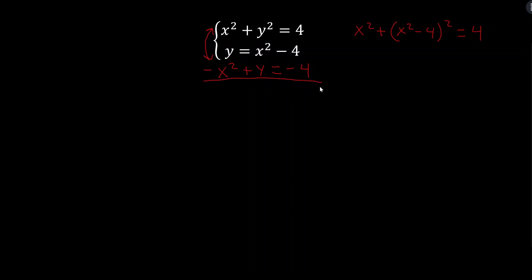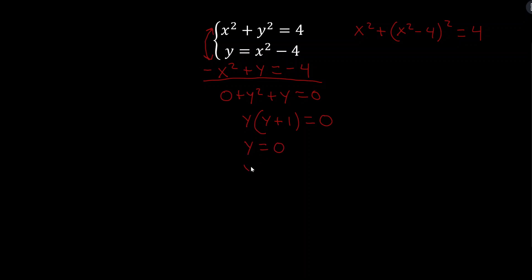Adding the two equations, x squared minus x squared is zero, and y squared plus y equals 4 minus 4, which is 0. So y squared plus y equals 0. Factoring out a y gives y times (y plus 1) equals 0. Setting each factor equal to zero gives y equals 0 and y equals negative 1 — two y values, and now we need to find the corresponding x values for each.